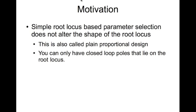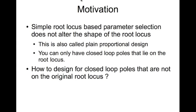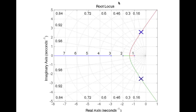What this means is that you can only have closed-loop poles that lie on the original root locus. If you vary parameter k, the closed-loop poles just march along the root locus. For any selection of k, you will only get closed-loop poles on the original root locus. For example, this complex pair lies on the root locus, so you can obtain these closed-loop poles for some particular value of k.